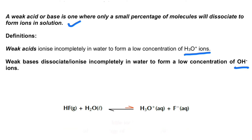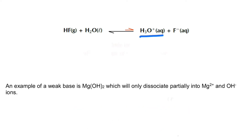An example of a weak acid is hydrofluoric acid, HF, which when it ionizes produces a low concentration of H₃O⁺. We can see that denoted by the arrow — in the forward reaction, not much product is formed. An example of a weak base is magnesium hydroxide, which only dissociates partially into Mg²⁺ and OH⁻ ions.